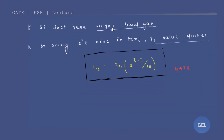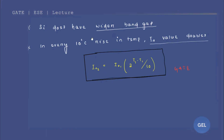There are two important points to remember. Silicon does have a wider band gap. And in every 10 degree centigrade rise in temperature, the reverse saturation current value doubles, because this formula is going to apply there. So you need to remember this formula — it is very interesting. I will give you the derivation later, but just remember this formula. The derivation is not in your syllabus, but this formula is very much important for the GATE exam.